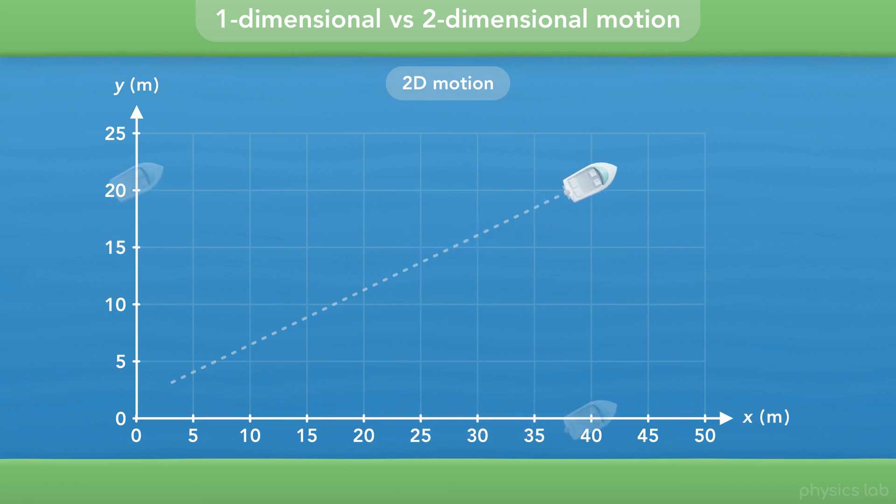From this point of view, it's moving to the right, and it's moving up. In most 2D motion examples, we're going to label the axes as X and Y, regardless of the point of view.